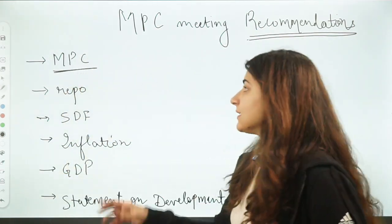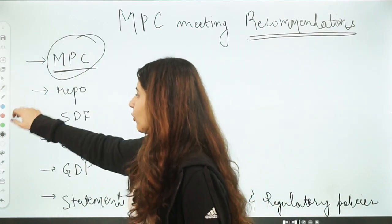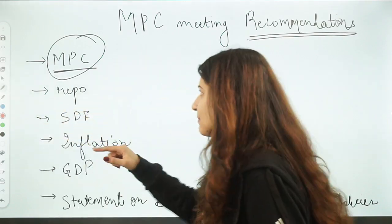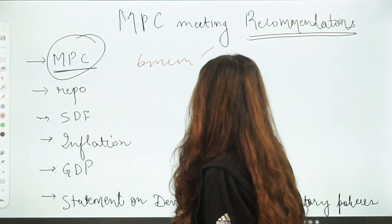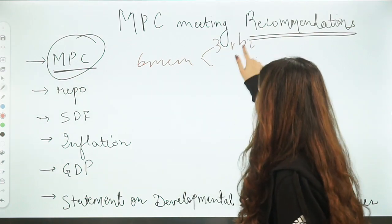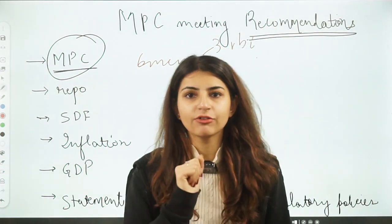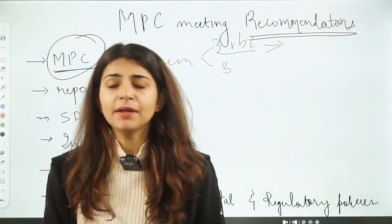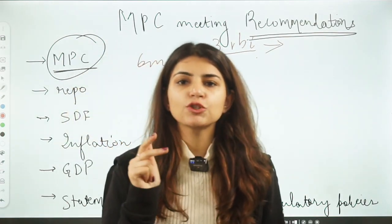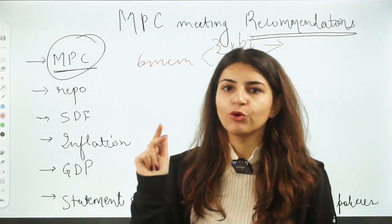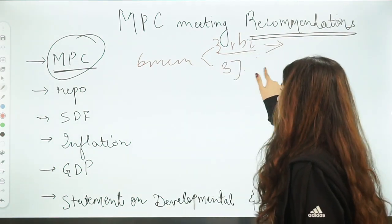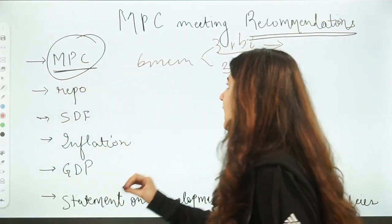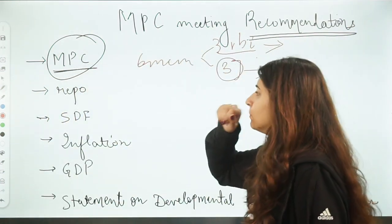Now we are going to talk about the key highlights and key recommendations of this Monetary Policy Committee meeting. First of all, we have to understand what is the Monetary Policy Committee. This is a committee of 6 members — 3 are from the RBI and the rest 3 are nominated by the Central Government of India. The 3 members from RBI are the Governor, the Deputy Governor, and a third member nominated by the Central Board of Directors of RBI. The rest 3 are nominated by the Central Government, so that the government also has a say in monetary policy.